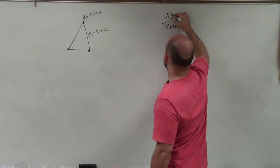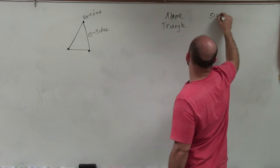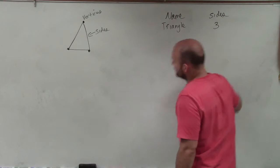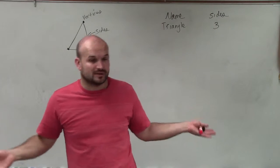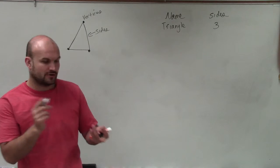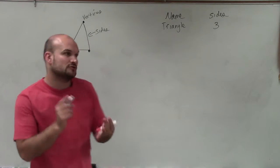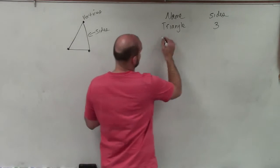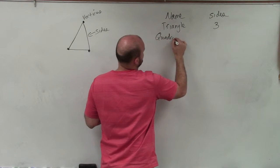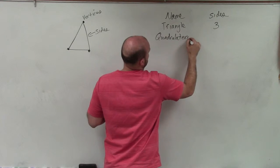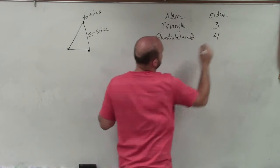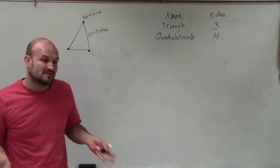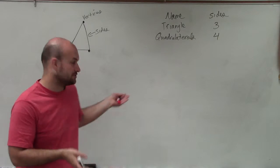So I'm going to say here is the name, and here is the number of sides. Now, a quadrilateral - you should be very familiar with a couple of quadrilaterals: parallelogram, square, rectangle, trapezoid. But those are what we call quadrilaterals. And those have four sides. So as long as it has four sides and it's a polygon, we call it a quadrilateral.